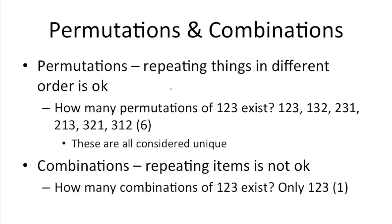Moving on to permutations and combinations. With permutations, order matters. So for instance, here we have a question asking us how many permutations of the numbers 1, 2, and 3 exist. And here are the 6 different ways. So 1, 2, 3, and 1, 3, 2 are not considered the same thing. They're considered unique answers or unique permutations.